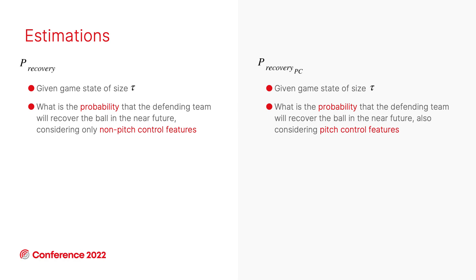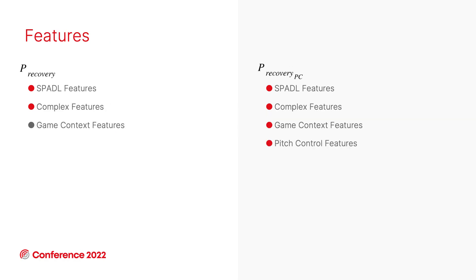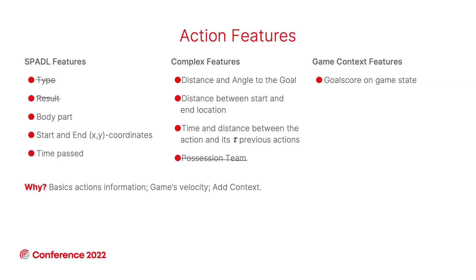We do this considering non-pitch control features and also considering pitch control. For peer recovery, we consider spatiotemporal, complex, and game context features — all action features. Peer recovery PC differentiates itself by also adding pitch control features. These action features are deeply inspired by KU Leuven's work.